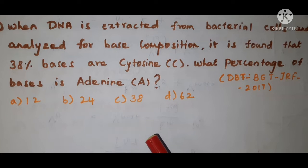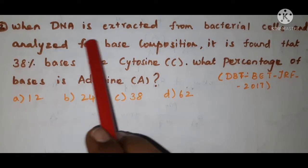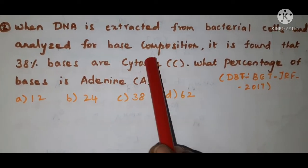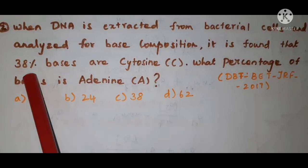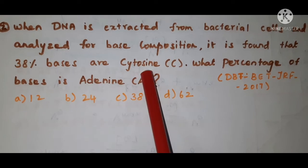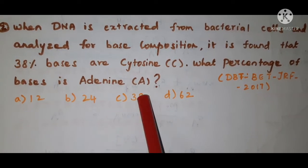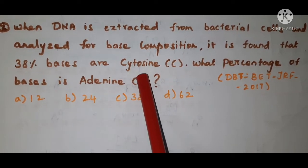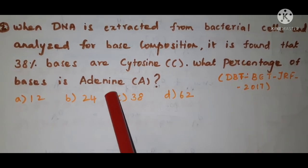Students, today we are going to see how to calculate percentage composition of bases in DNA. See the problem: when DNA is extracted from bacterial cells and analyzed for base composition, it is found that 38 percent of bases are cytosine. What percentage of bases is adenine? They have given the percentage composition of cytosine and they are asking for the percentage composition of adenine.